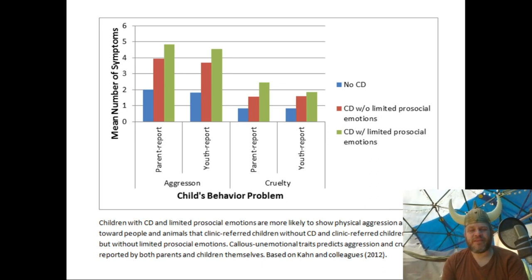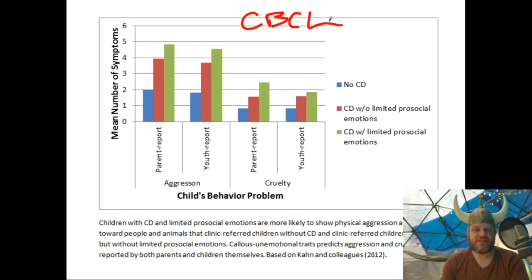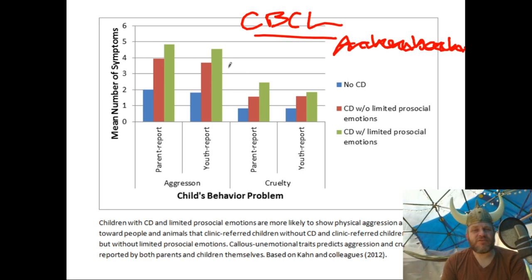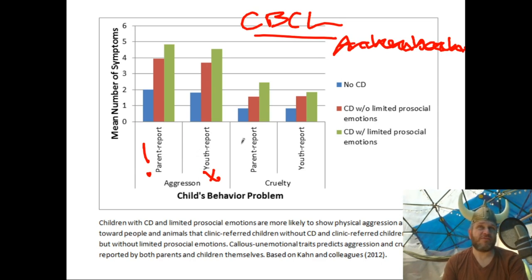Children with conduct disorder are more likely to show inappropriate aggression and cruelty. This information comes from the CBCL — the Child Behavior Checklist, sometimes called the Achenbach. It's questionnaires about children's behavior. If the children are old enough, they fill out a questionnaire. Parents — meaning any caregiver who lives a lot of the hours of the day with a kid — almost always know the child's behavior best.